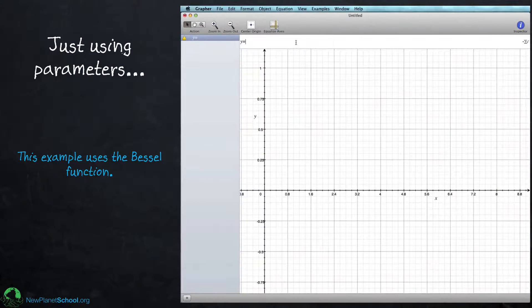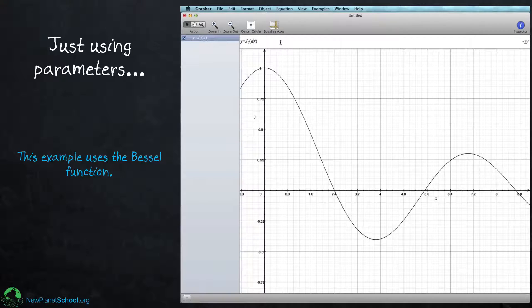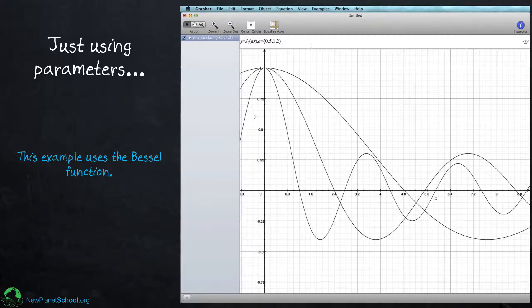Let me start off by just talking about parameters because maybe not everybody knows how to do that. So let me just define a function here. This happens to be a Bessel function. I introduce a parameter a and I can give it several values: 0.5, 1, and 2. MacGrapher will plot it for those three values. So that's just how you put a parameter in.